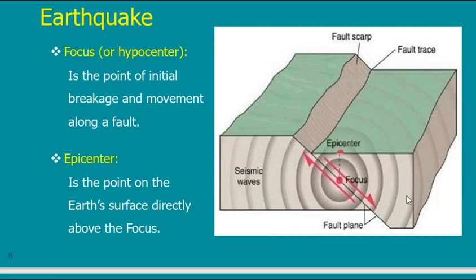The seismic waves propagate from the energy release point outward. The focus must lie exactly on a fault plane, because energy cannot penetrate a single solid point — it penetrates cracks or faults. So the focus is always located on a fault plane where the energy release is possible.